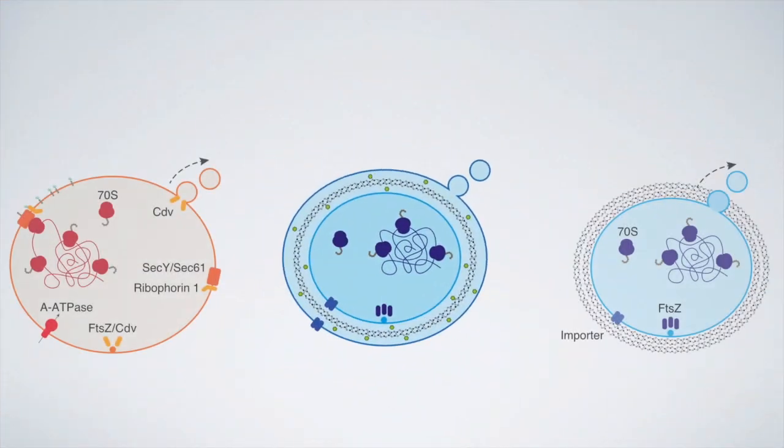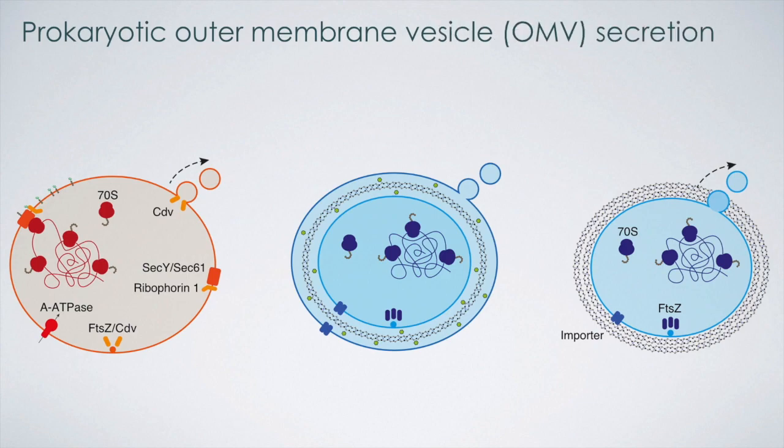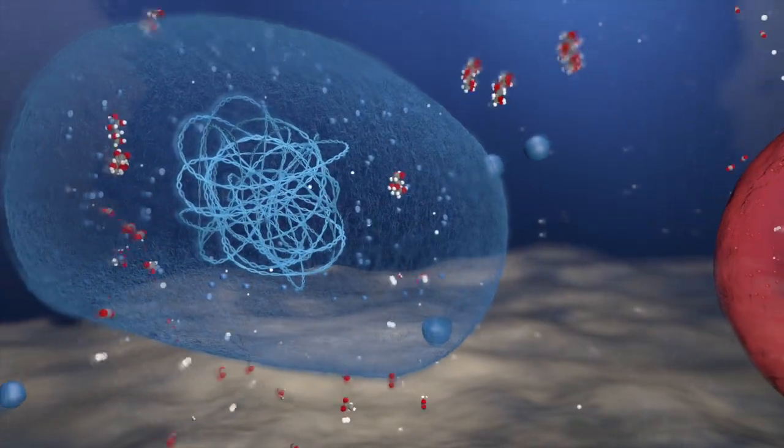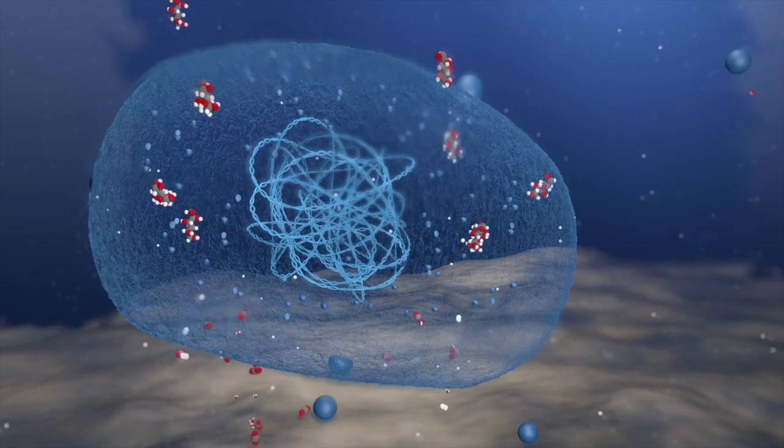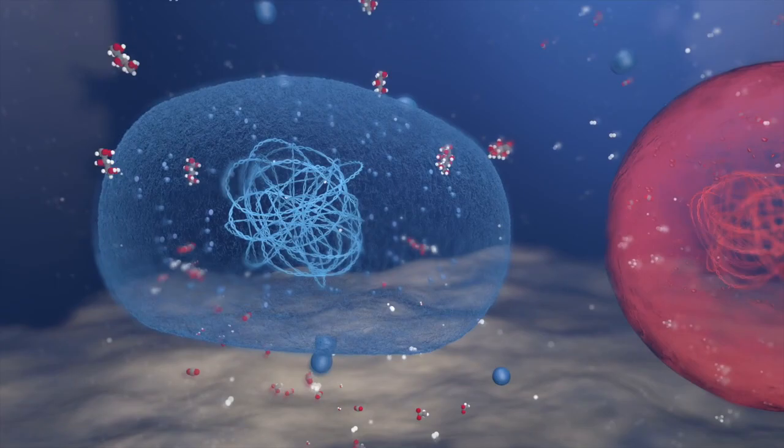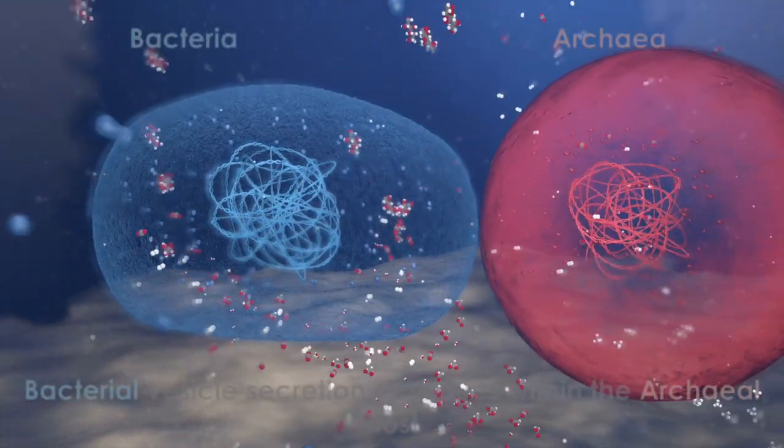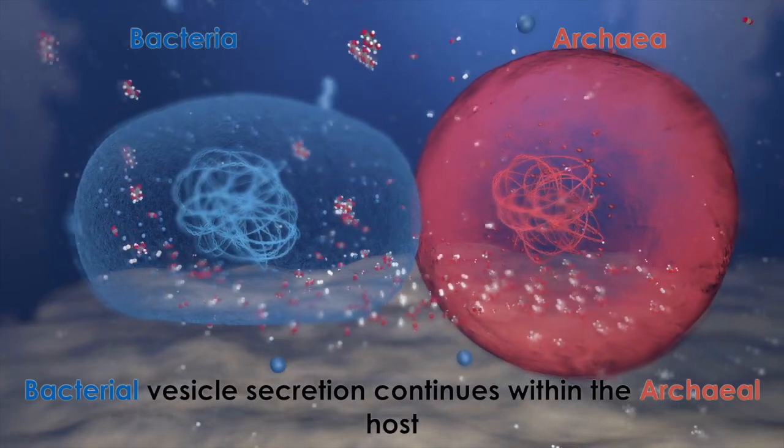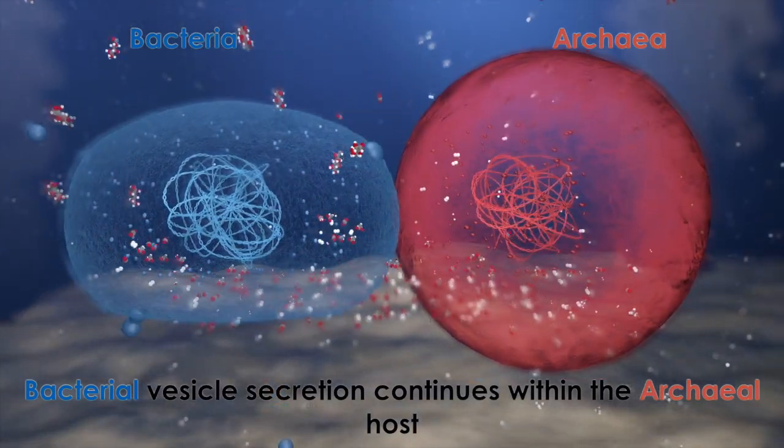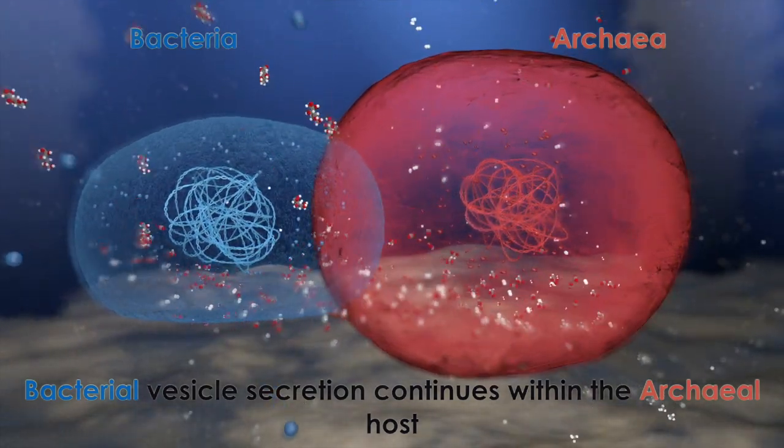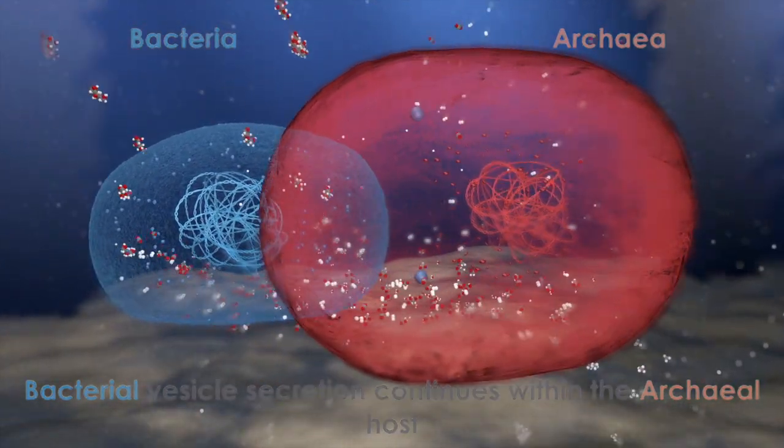In our paper, we propose that the eukaryotic endomembrane system came from the mitochondrion itself in the form of outer membrane vesicles called OMVs for short. It has been known for decades that prokaryotes secrete vesicles into the environment. The essence of our proposal is that the bacterial ancestor of mitochondria was able to produce OMVs and that it did so as it became an endosymbiont and that those OMVs provided the initial seed of the eukaryotic endomembrane system.